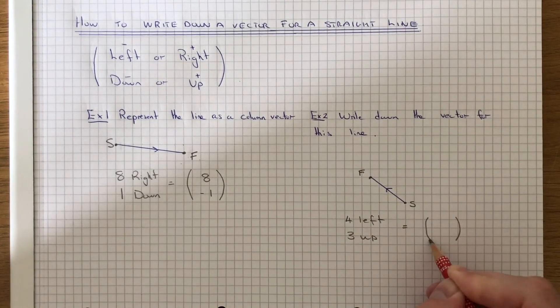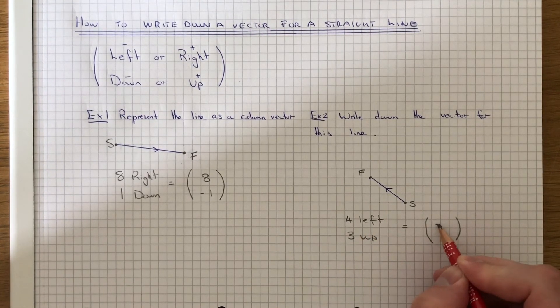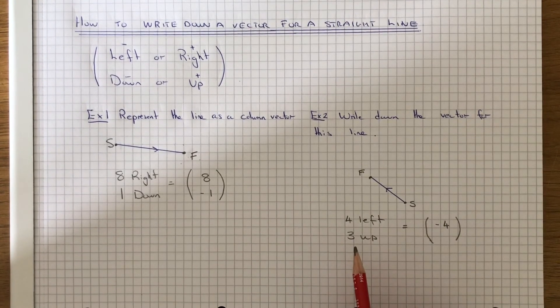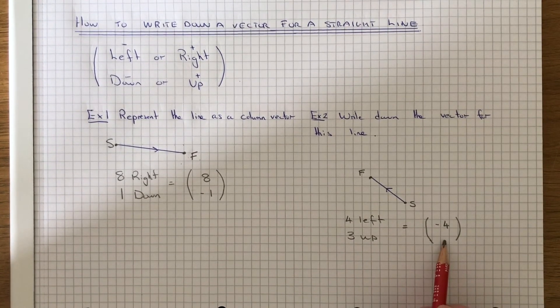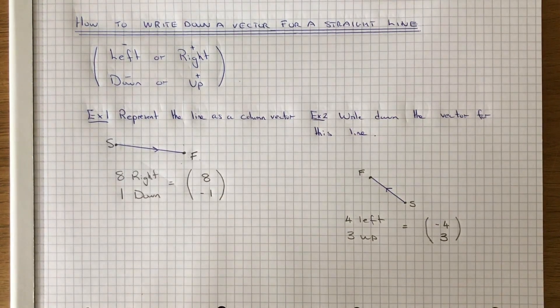So we put the cross number at the top of the vector. So it's 4 left, so since it's left, we put minus 4. And the second number we put at the bottom of the vector. This one was 3 up, so this will be positive 3. And that's our column vector for the line.